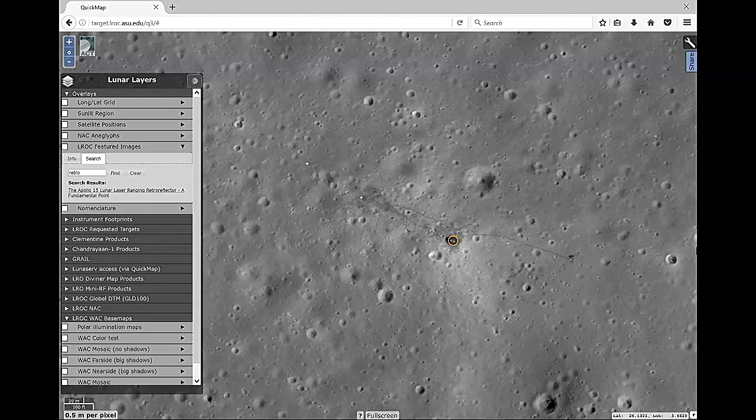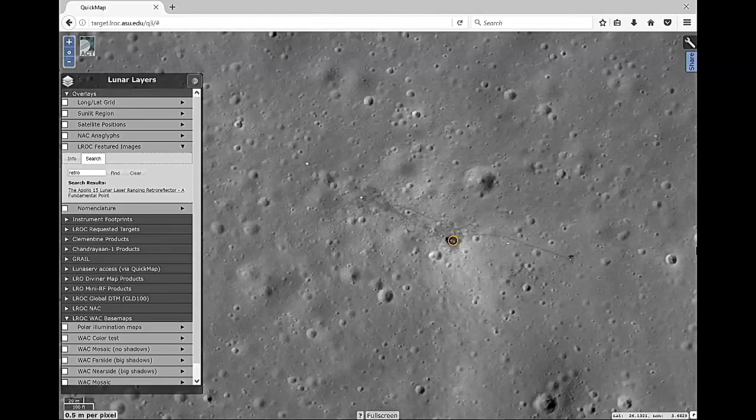So everything that the astronauts left, cars, mirrors, their poo, it's all up there for us to see with sufficiently high resolution.